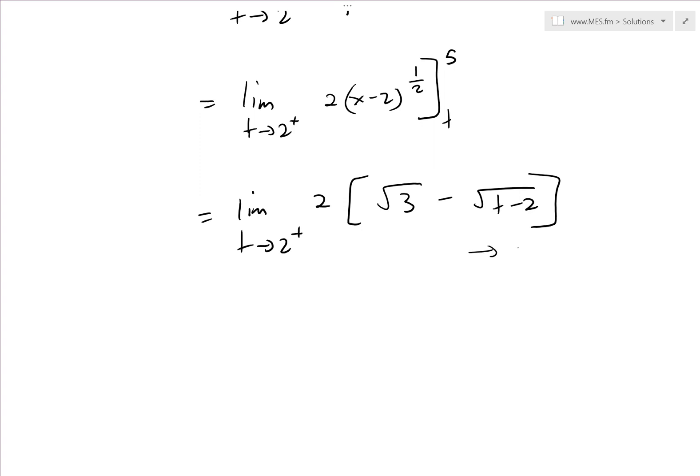This approaches 0 from the right side—positive 0 as opposed to negative. This means this exists as a real number, approaching 0 as t approaches 2 from the right side.